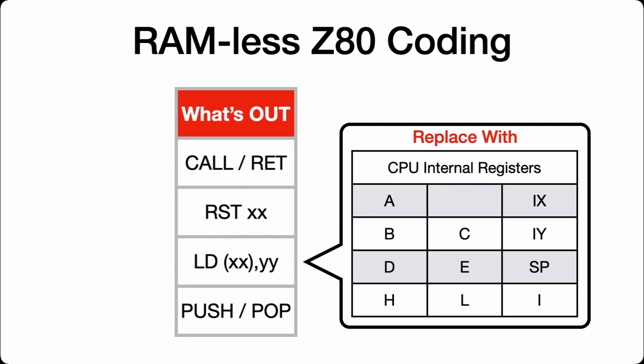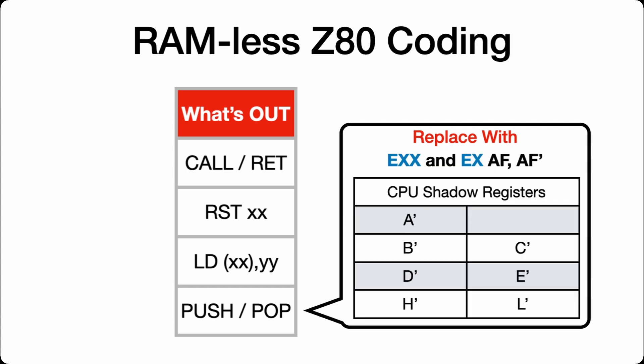For LOAD, since we can't load into memory at all, we need to use registers to save our data. The registers available are A, BC together or individually, DE together or individually, HL, the index registers IX and IY, and we can even use the stack pointer since we can't use the stack anymore. We can also use the I register if you're not using interrupt level 2. For PUSH and POP, we can use the exchange command. The Z80 also has shadow registers you can swap between using EXX or exchange AF with AF — it's effectively a one-level stack.